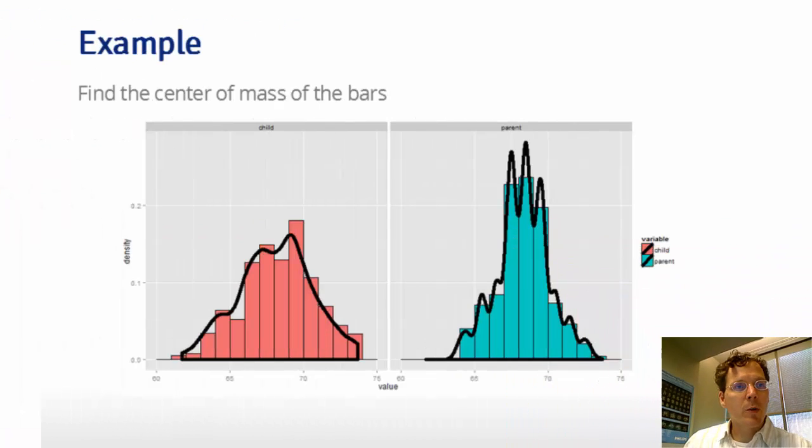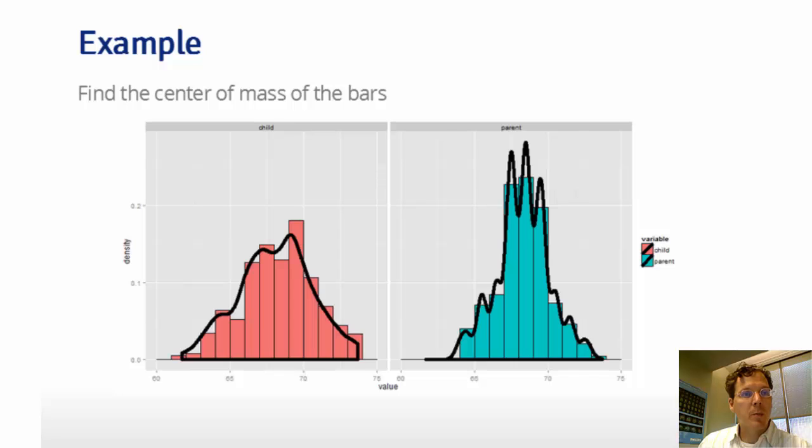I have some code here to show an example of taking the sample mean of data and how it represents the center of mass by drawing a histogram. Here I have the Galton data. The code can be found in the markdown file associated with the slides on GitHub.